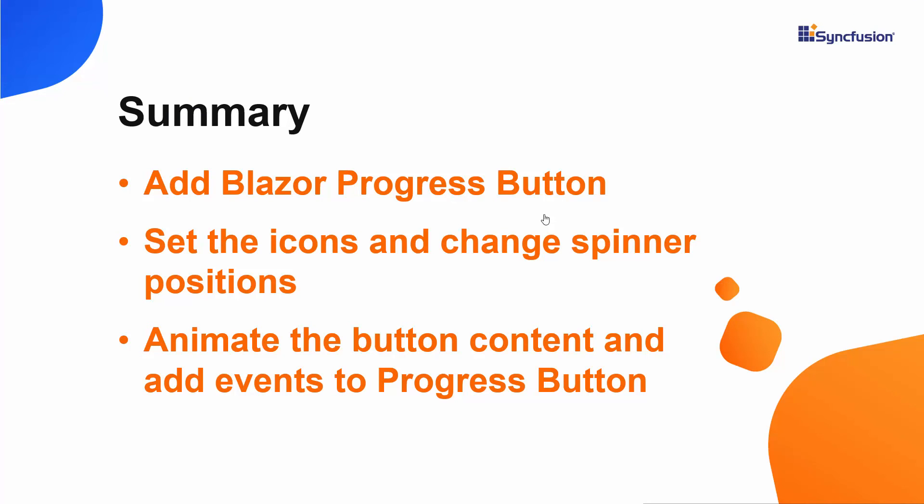Now let me quickly recap what we have seen so far. We have seen how to create a Blazor project using Visual Studio 2019 and add a Syncfusion Blazor progress button component in a WebAssembly app. We have seen how to set icons and different spinner positions, and how to add events to the progress button component. Finally, we have seen how to animate the button content and the progress button spinner.